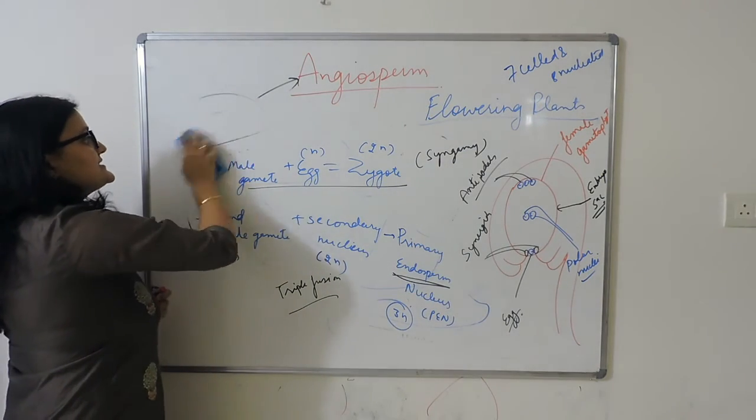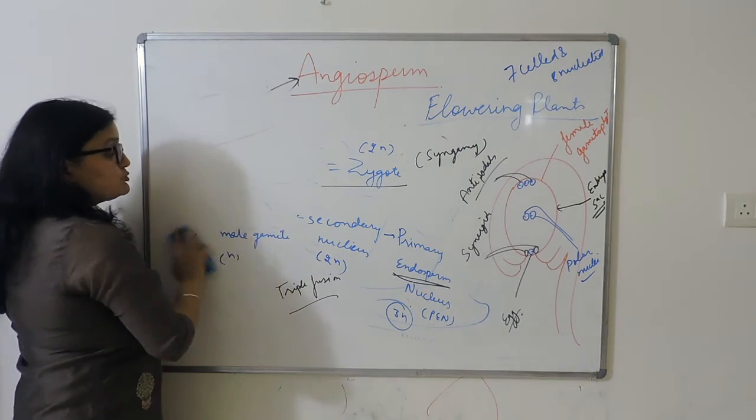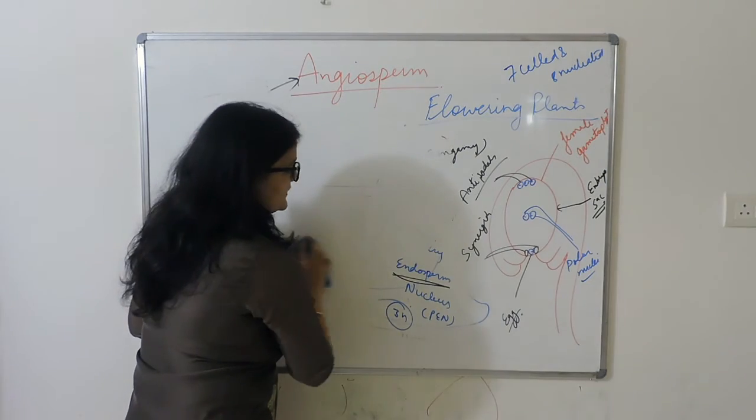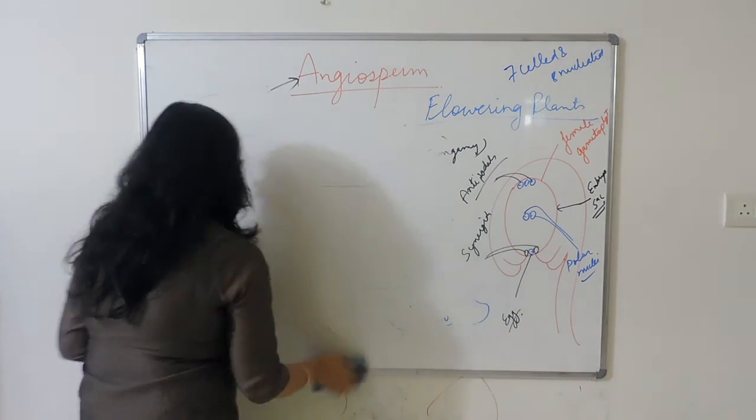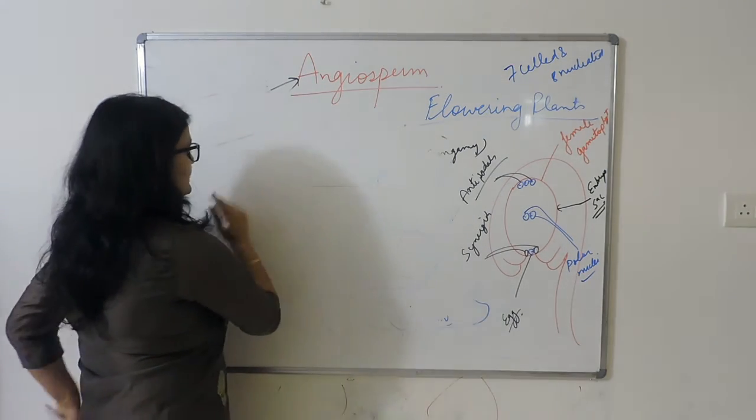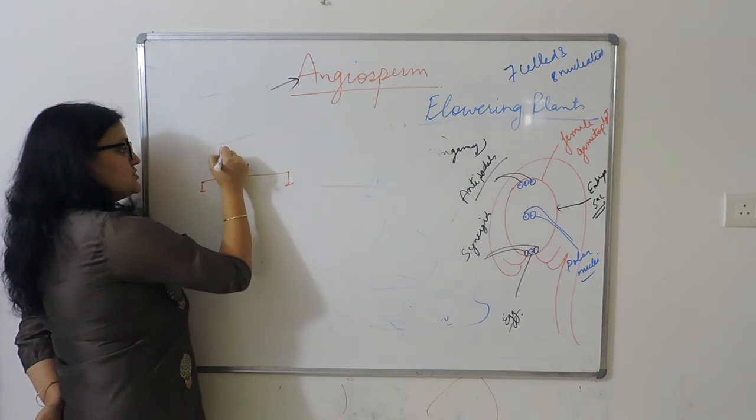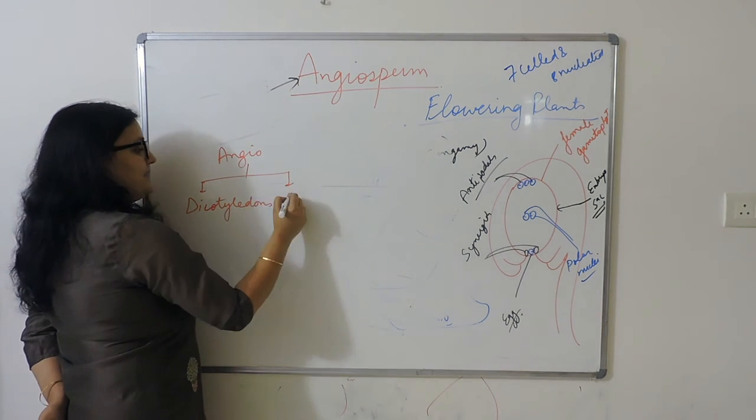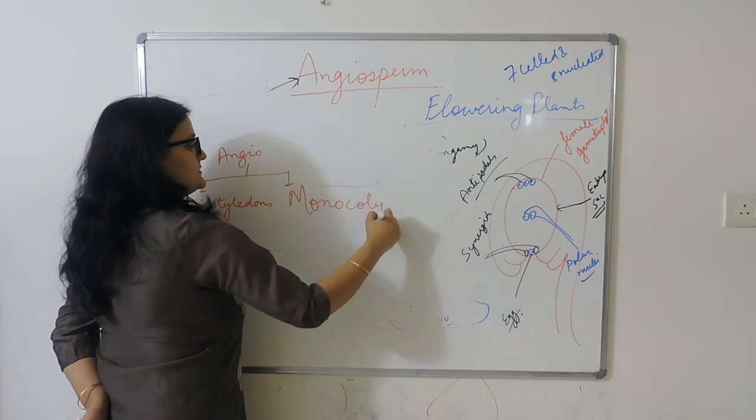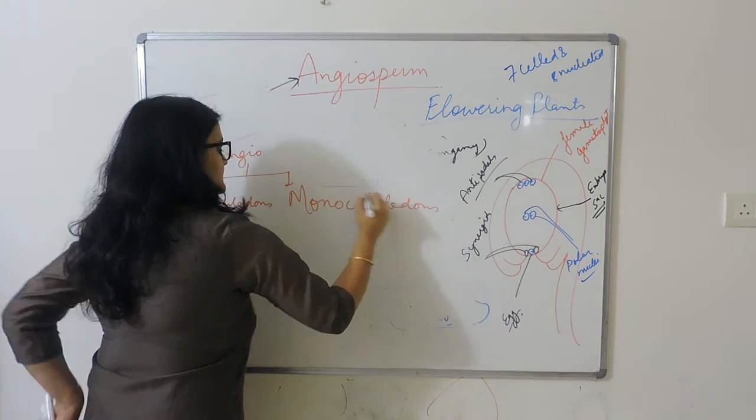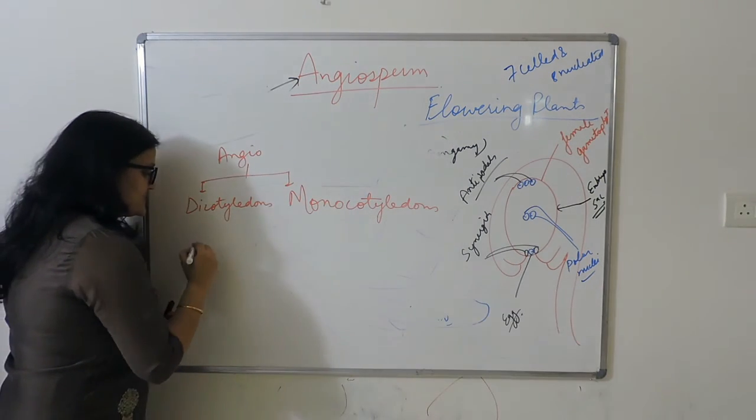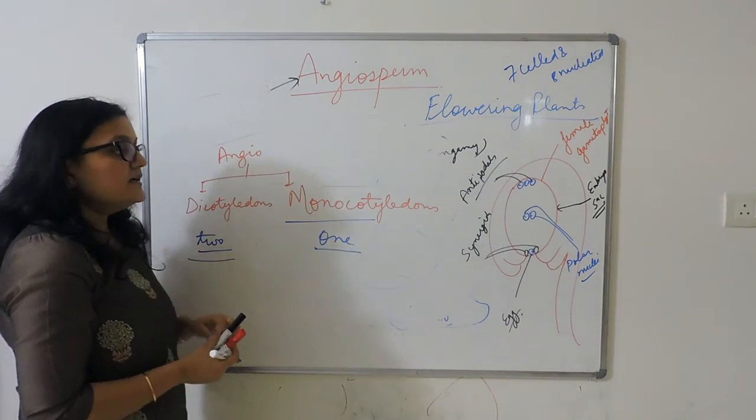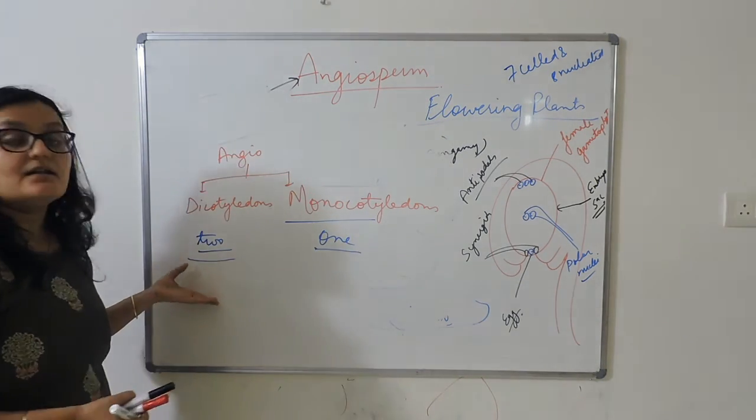Then we talk about angiosperm classes. Angiosperms are divided into two classes: dicotyledons and monocotyledons. In dicotyledons, there are two cotyledons. Examples include mango for dicotyledons and wheat for monocotyledons.